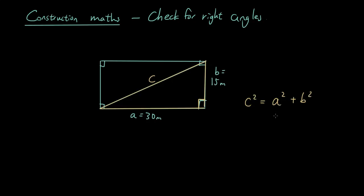So what is the Pythagoras theorem? We got C squared equals A squared plus B squared. Then you would go A is 30, B is 15, put them into the formula and we want to find out what C is.